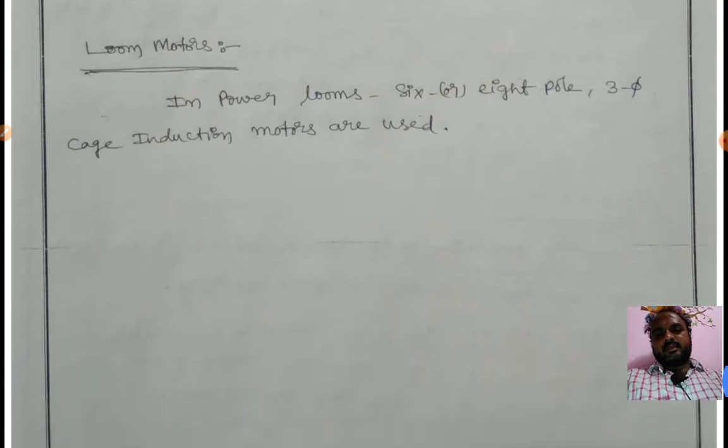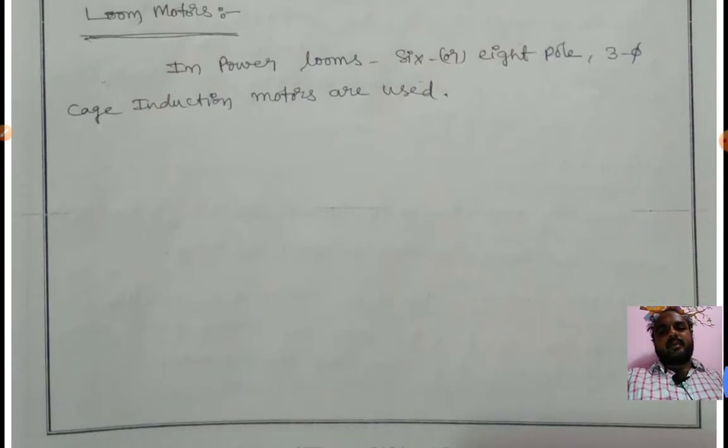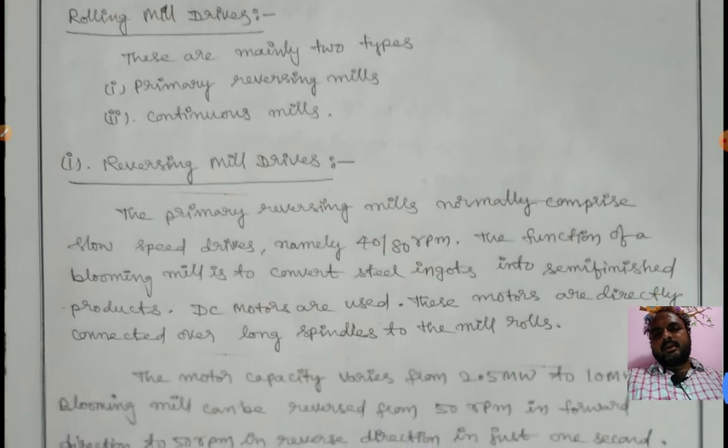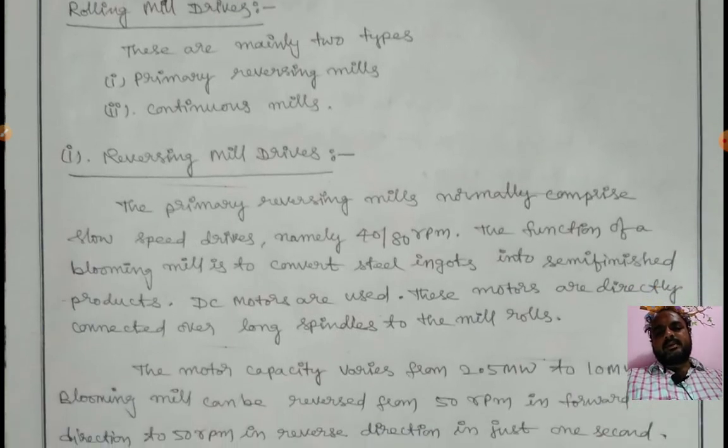Loom motors: In power looms, six or eight pole three-phase cage induction motors are used. Next, rolling mills: there are two types—primary and continuous mills.